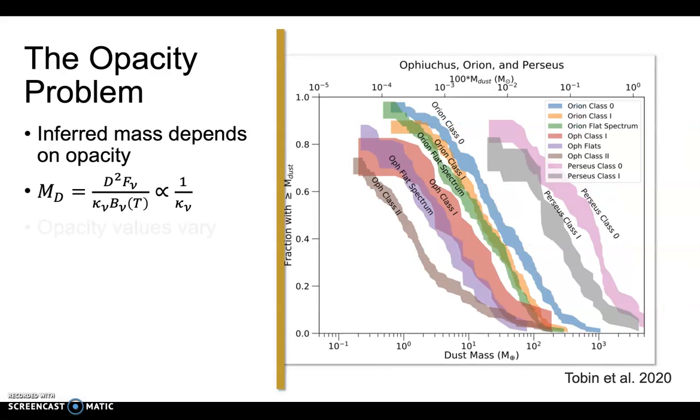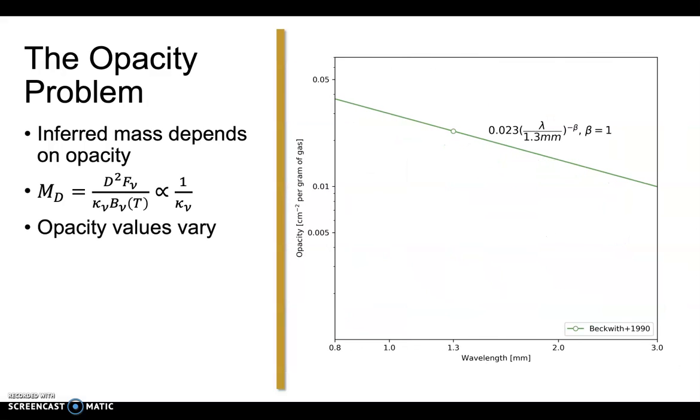There is a long-standing problem that the dust opacity is a very difficult quantity to determine. The most widely used opacity prescription can go back to Beckwith et al. 1990, with about 1,400 citations by now. The Beckwith prescription sets opacity to be 0.023 per gram of gas at 1.3 mm, with an opacity index beta of 1.